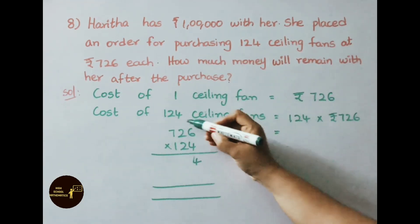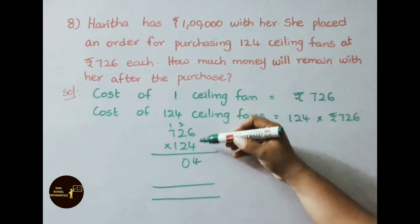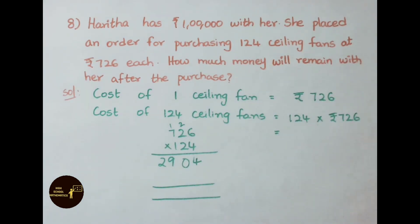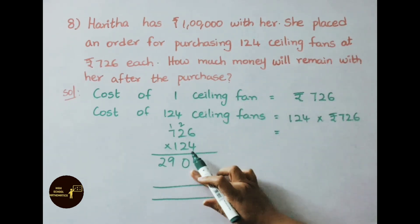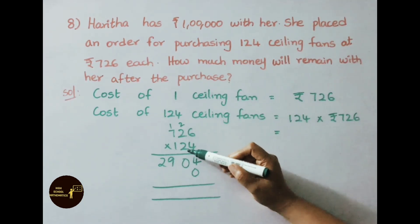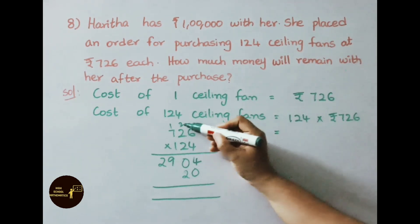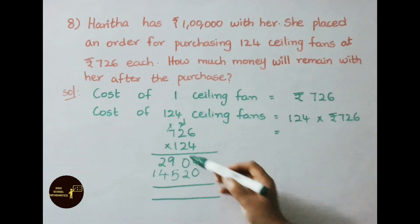4 times 6 is 24, so 4 carry 2. 4 times 2 is 8 plus 2 is 10, 0 carry 1. 4 times 7 is 28 plus 1 is 29. Now multiply with 2. Keep here, 0. Now multiply with tens place number 2. 2 times 6 is 12, so 2 carry 1. 2 times 2 is 4 plus 1 is 5. 2 times 7 is 14.